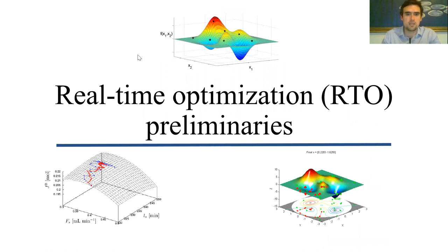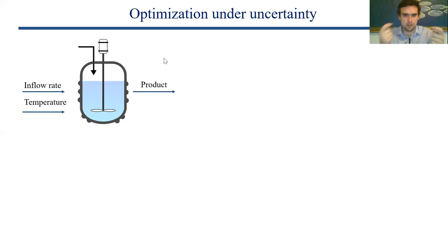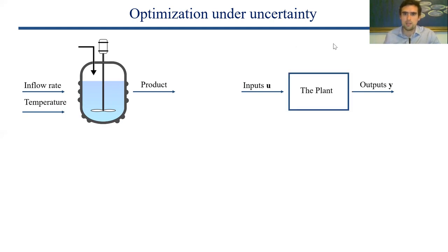So first, what is real-time optimization? Let's assume that we have some reactor with some inflow rate and some temperature, and we want to move these around to maximize a product or some objective function, maybe weighted by price. I'll be denoting the inputs as u — what I can move around — and y as my outputs, which I'm measuring and want to optimize. In real-time optimization, we call the real system the plant. Here it's a reactor, but in general it can be a process plant or an airplane.